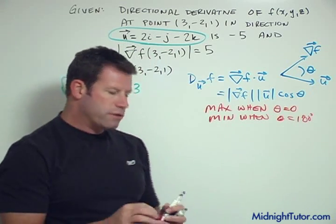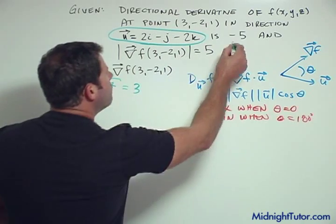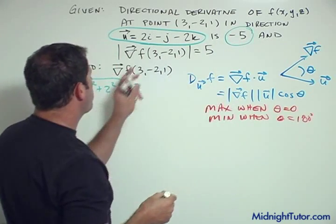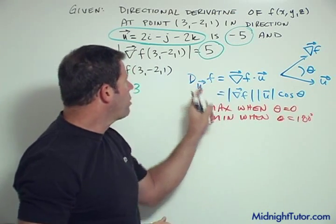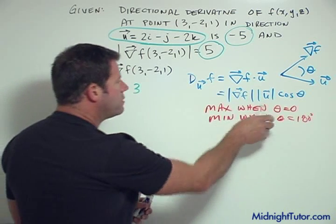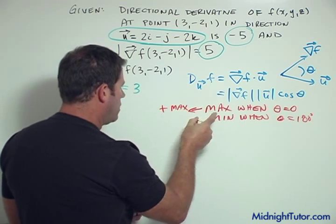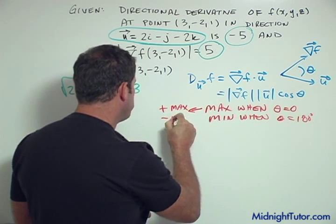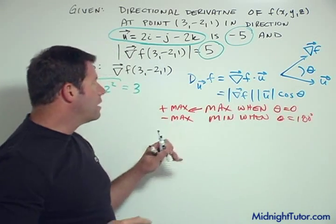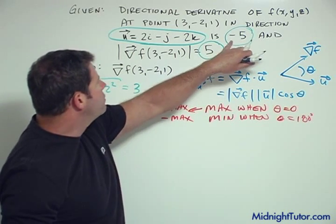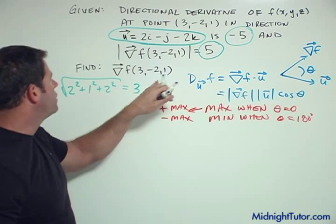Now let's go back to our problem statement. What we're told is the directional derivative at this point is -5 and the magnitude of the gradient is 5. So notice at the point where theta is 0, the directional derivative is going to be the plus max value, and at the point where theta is 180° it's going to be the negative max value. But it's the same absolute value, just a plus or minus sign. So we know that we're dealing with a situation here of 180°.